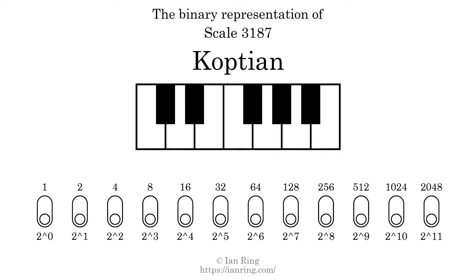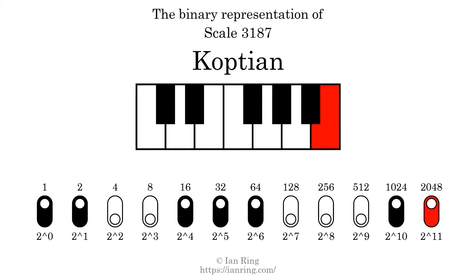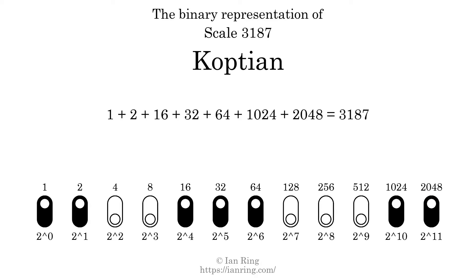The binary representation of this scale is determined by mapping tones of the scale to binary digits. Each binary digit represents a power of 2. To get the scale number, we add the powers of 2 together. The powers of 2 that are present in the scale, all added together, equals 3187. That is why the scale number, in decimal, is 3187.